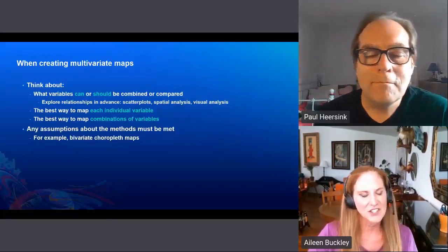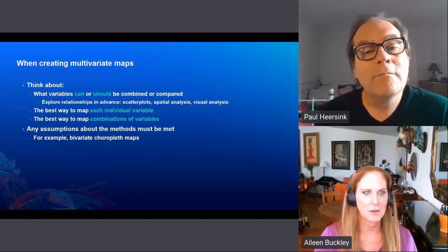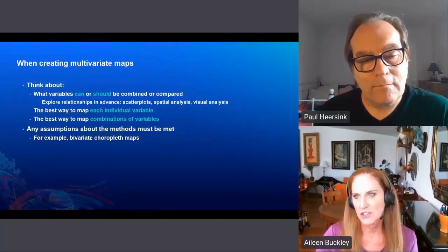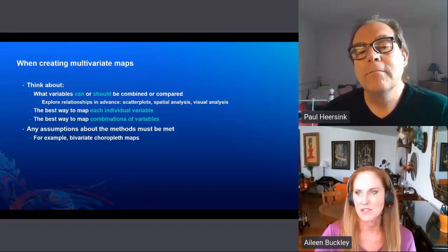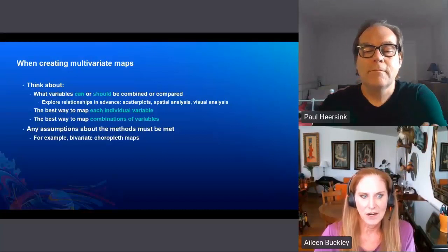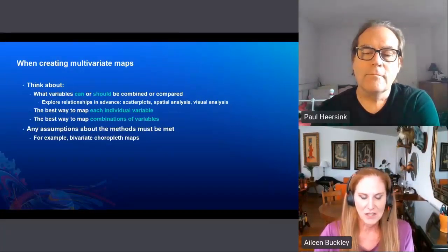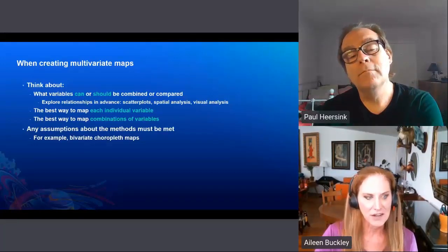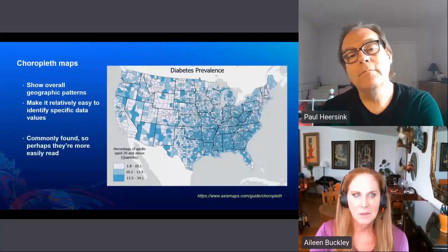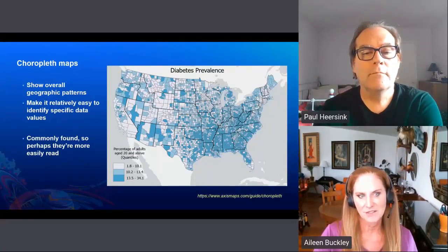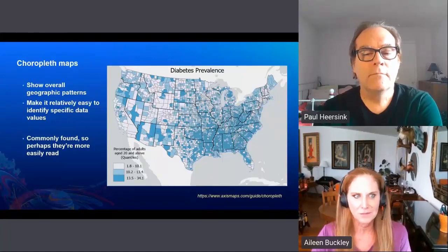When creating multivariate maps, there are a number of things to consider. You'll want to think about which variables can or should be combined or compared — you could explore relationships among variables in advance using spatial analysis, scatter plots, or other visual analysis. You need to think about the best way to map each individual variable as well as combinations of variables. Any assumptions about the mapping methods themselves must be met. Let's look at bivariate choropleth maps — arguably the most common thematic map type.